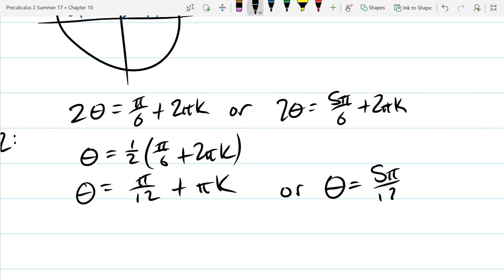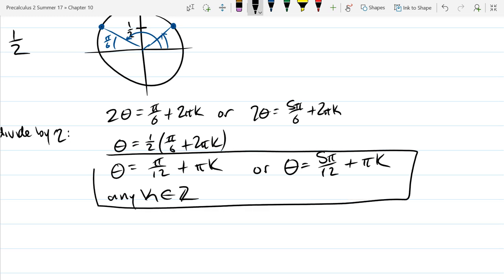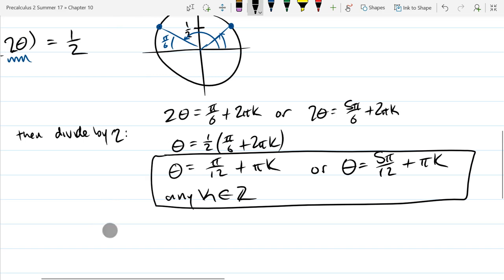And the other one will be almost the same. Except we're going to have five pi over 12 plus pi k. And we need to say where k comes from. This is for any integer k. There we go.